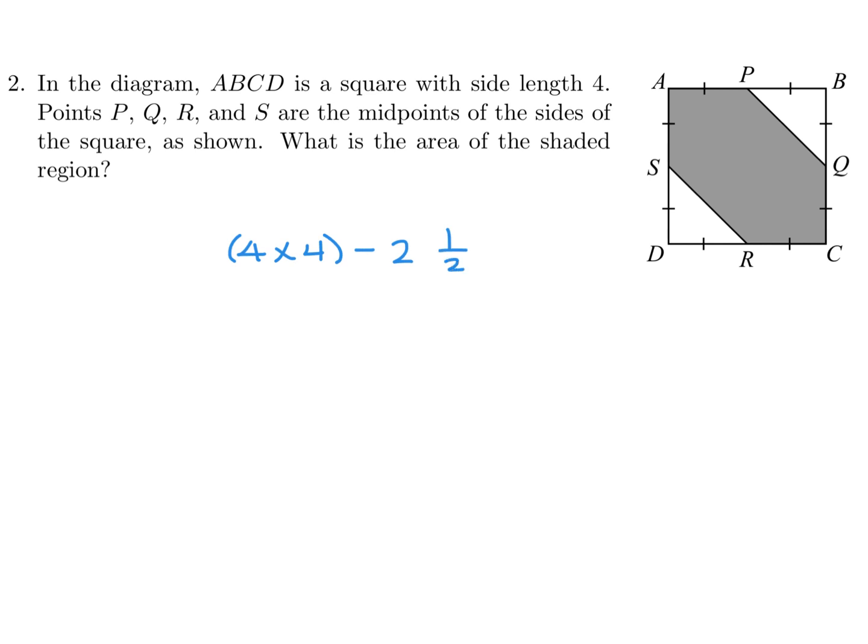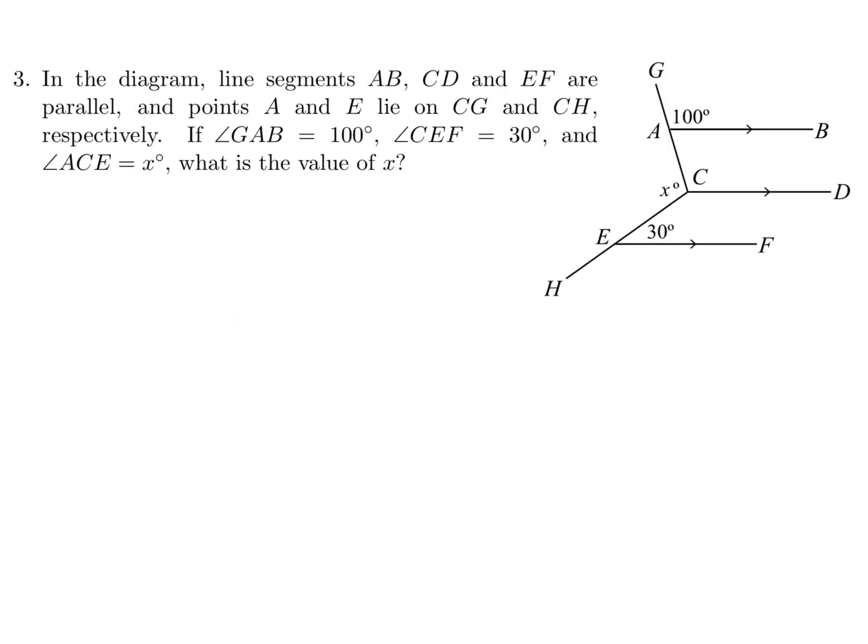Each triangle is represented by one-half base times height. The base would be 2 and the height would be 2. So this is 16 minus 4, and that is 12.